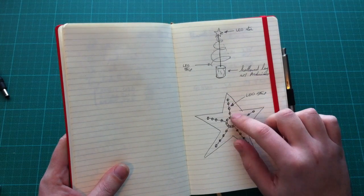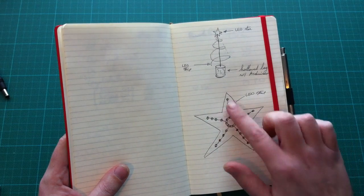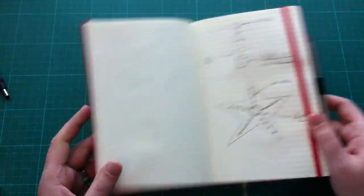I originally intended to use an LED strip which I would cut into pieces to make the star shape, but in the end I came across the NeoPixel sticks from Adafruit.